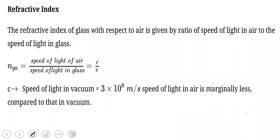The refractive index is the ratio of the speed of light in air or vacuum — which is 3 × 10⁸ m/s — to the speed of light in the given medium. For glass: n = speed of light in air / speed of light in glass. For water: n = speed of light in air / speed of light in water. The formula is n = C/V. Refractive index is a ratio of similar quantities, so it has no unit.